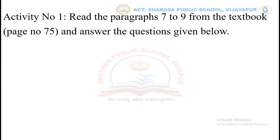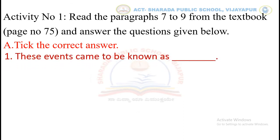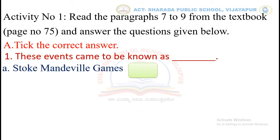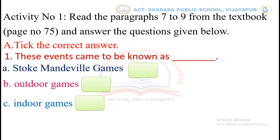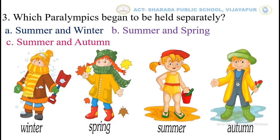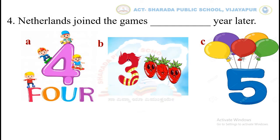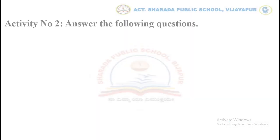Let's move to Activity number 1. Read the paragraphs 7 to 9 from the textbook, page number 75, and answer the questions given below. Pick the correct answer. In the same way, you have to continue with the remaining questions.